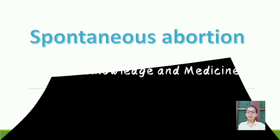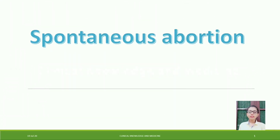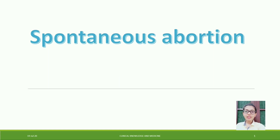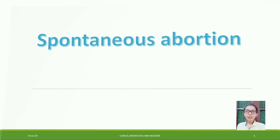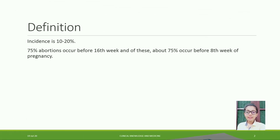Welcome to Clinical Knowledge in Medicine. Today's topic is spontaneous abortion, also known as miscarriage. The incidence is about 10 to 20 percent. Approximately 75 percent of abortions occur before the 16th week of pregnancy, and out of these, 75 percent occur before the 8th week of pregnancy.